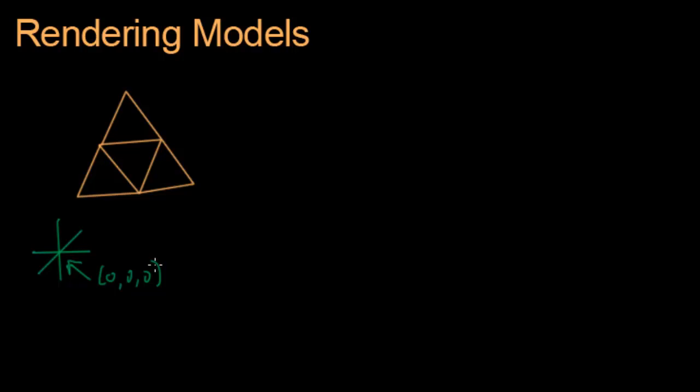After we pass it to the video card, we are also going to pass a matrix to the video card which I'm going to call the model matrix or M. The purpose of this matrix is the video card will take every vertex of every triangle and pass it through the model matrix.